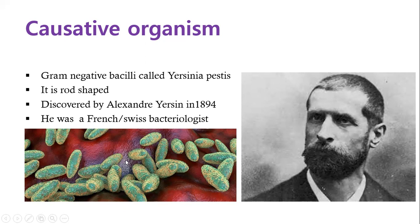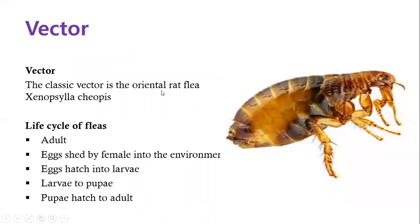Yersinia pestis are gram-negative bacilli — rod-shaped bacteria. Because this is a vector-borne disease, the Yersinia is carried by a rat flea. Specifically, the classical oriental rat flea known as Xenopsylla cheopis is the flea responsible for carrying and transmitting the bacteria. The life cycle of this flea includes an adult form: the female flea lays eggs into the environment, the eggs hatch into larvae, which become pupae, and the pupae mature into adults.